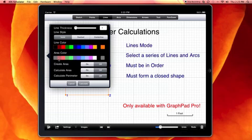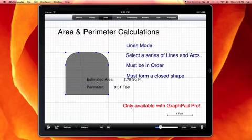In this case, we're going to color our area in a grayish color. We're going to turn the calculations on, and we're going to calculate. So we see our estimated area, as well as our perimeter.